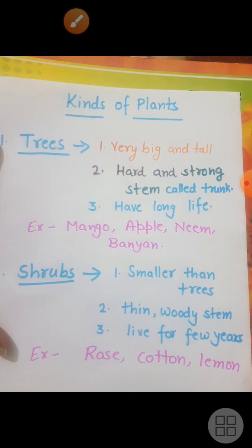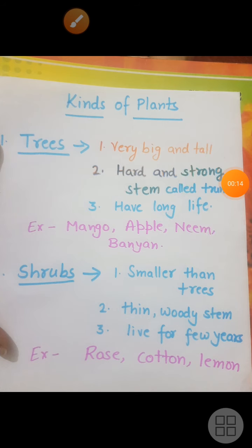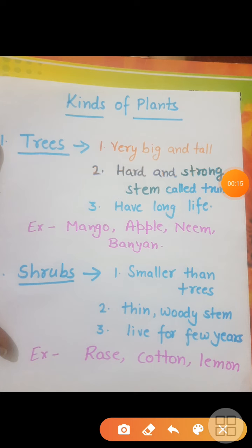There are different kinds of plants. First of all, here is Trees. Trees are very big and tall — lumbe hote hai. They have a hard and strong stem called trunk.